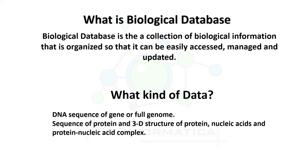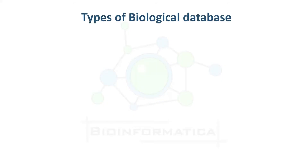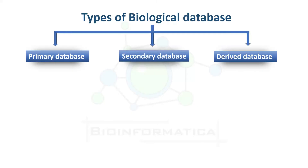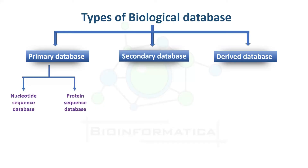There are 1,552 databases that are publicly accessible online, and these biological databases can be classified into three categories: primary database, secondary database, and derived database. Primary and secondary databases are differentiated on the basis of the source they are obtained from. Primary databases are collected from lab experiments, whereas secondary databases are derived from primary ones. Both are further classified for nucleotide sequence or protein sequence.